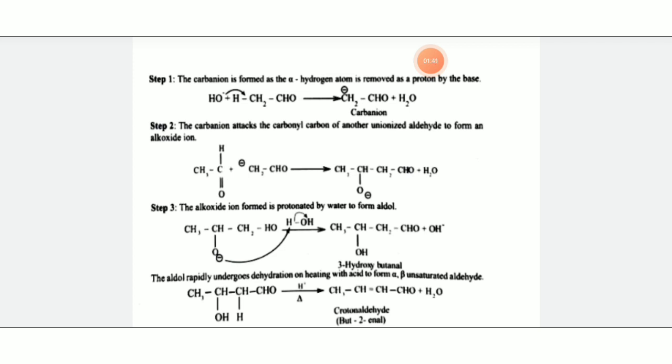The enolate attacks the carbonyl carbon of another unionized aldehyde to form an alkoxide ion. In this step, the enolate attacks the electropositive center of the aldehyde carbon. The proton transfers to the oxygen to form an alkoxide ion.